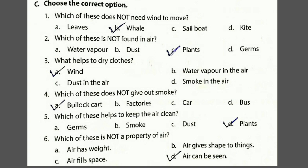Then second: which of these is not found in air? Options: A — water vapor, B — dust, C — plants, D — germs. Water vapor, dust, and germs are all present in air. Plants are not present in air. So the answer is option C, plants.